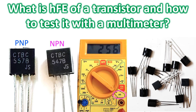An NPN transistor has N-type material on either side, while the central portion is P-type. The composition of a PNP transistor is the other way round.